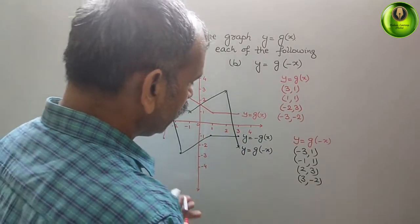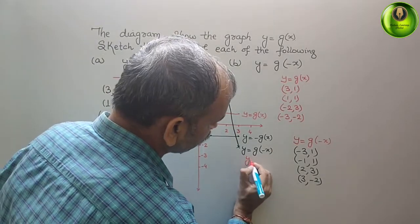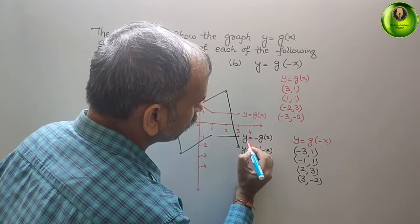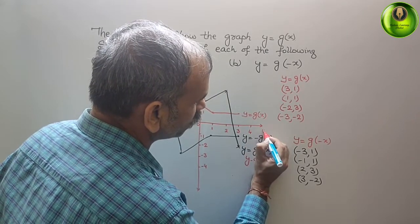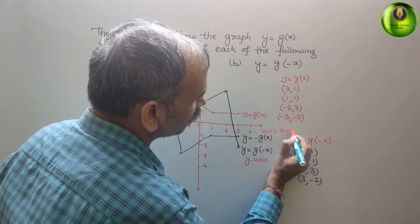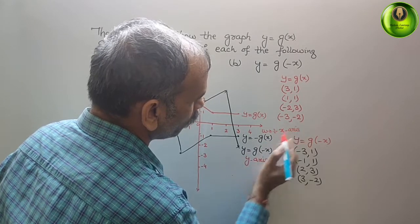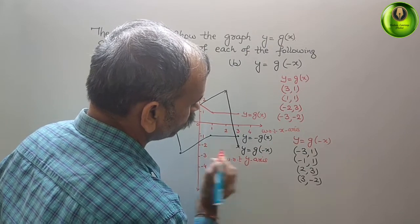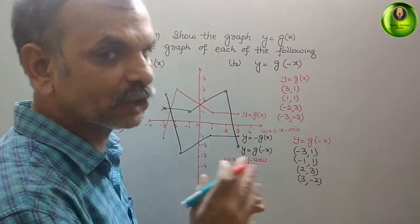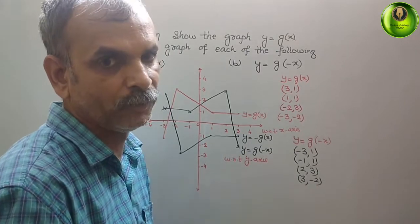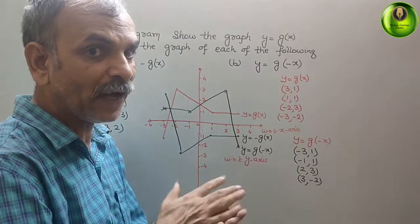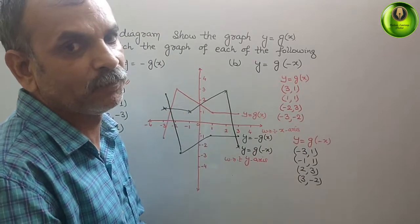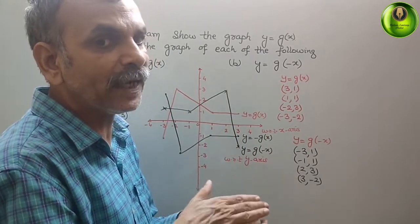To summarize: if the y-value is changed (i.e., y = -g(x)), you will get a reflection with respect to the x-axis. If the x-value is changed (i.e., y = g(-x)), you will get a reflection with respect to the y-axis.